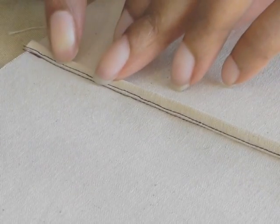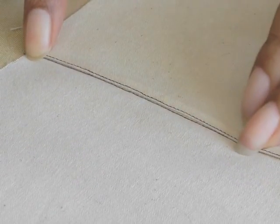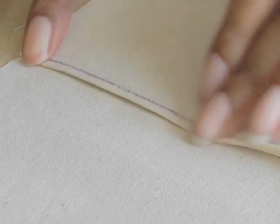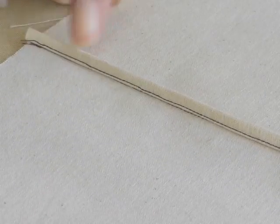Now here you have your self-bounded seam, and that is the other side. So on one side, you've just got one row of stitching, and on the other you've got a double row of stitching that's done by the sewing machine.